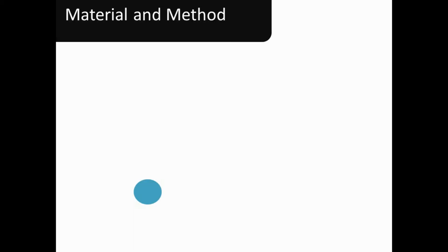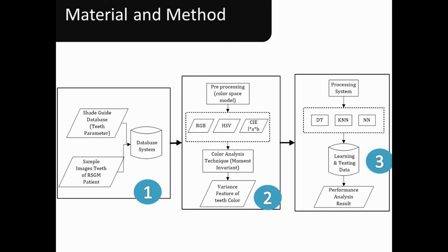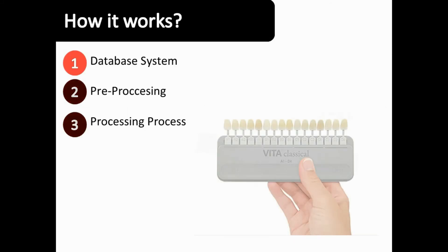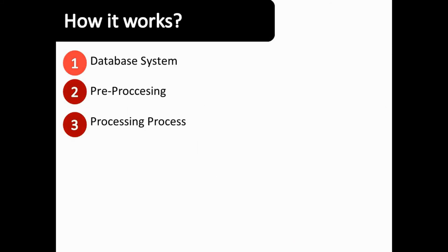The methodology involves collecting dental images to create a database system based on parameter criteria, especially the image-taking process. An identification process is then applied to the color characteristics from the dental images using color model calculation and analysis. These color identifications are called the pre-processing phase. This slide covers the database system.